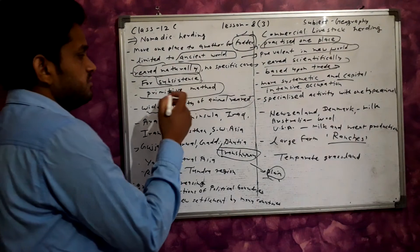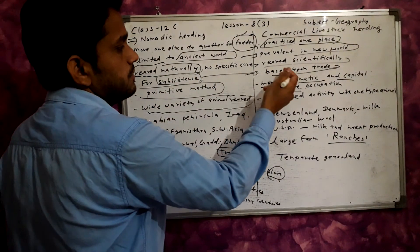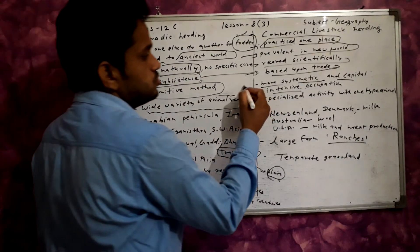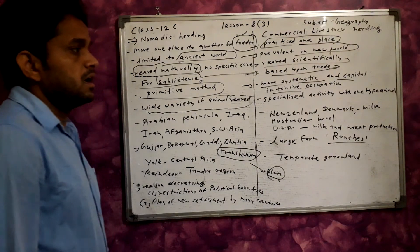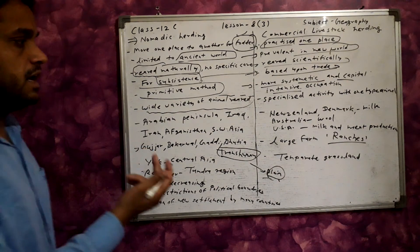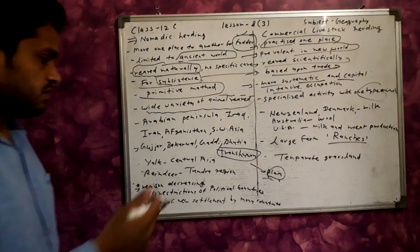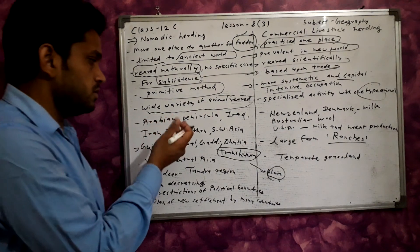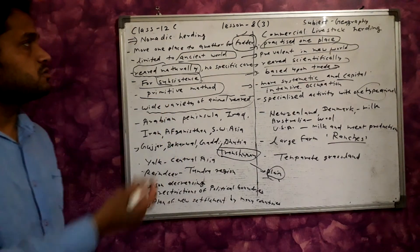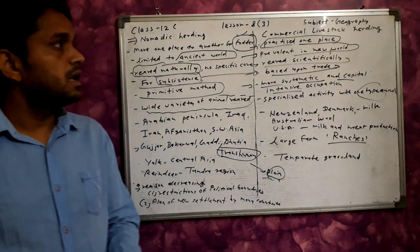In nomadic herding, animals are reared naturally and non-scientifically, whereas in commercial livestock herding, animals are reared scientifically. Nomadic herding is for subsistence, while commercial herding is for trade. Nomadic uses primitive methods with no capital investment and a wide variety of animals, whereas commercial herding is systematic, capital-intensive, and specializes in one type of animal.